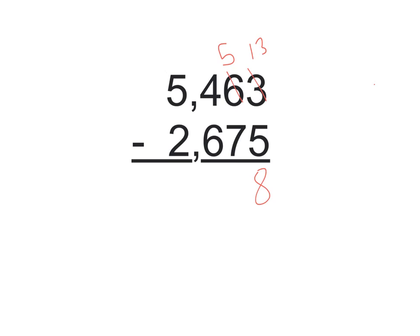And so I take a look now on my 10s. Okay, I need to take away 7,10s away from 5,10s, which I can't do, so I need to ungroup my 100s. So I used to have 4,100s, now I have 3,100s.